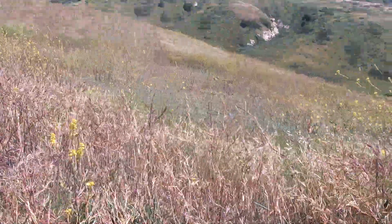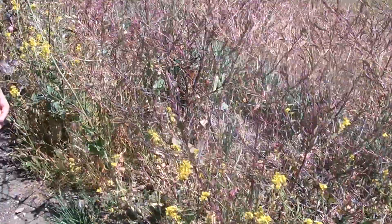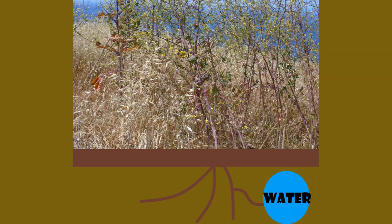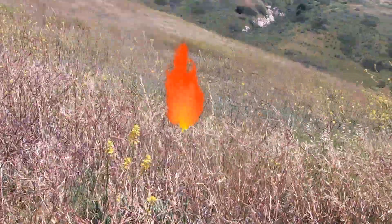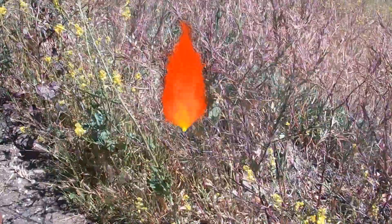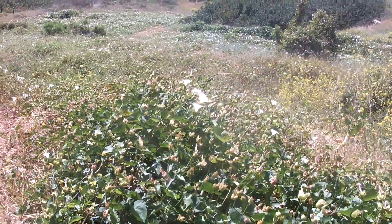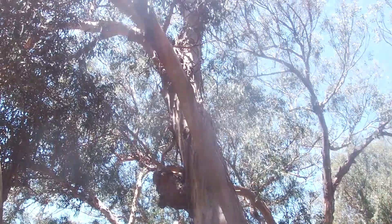Another invasive plant on the Channel Islands is the black mustard flower. It was brought to California by Spanish colonizers in the 1700s along with other plants from Europe. Like eucalyptus, black mustard takes resources away from native plants, and when summer comes, it dries out and becomes perfect fuel for fires, further endangering native plants.